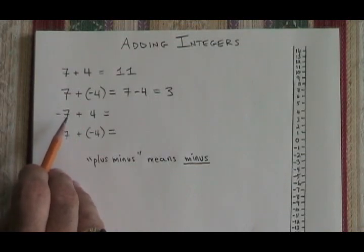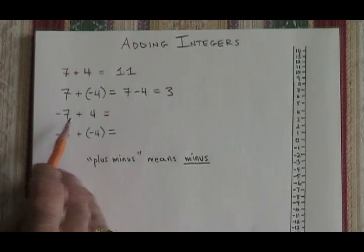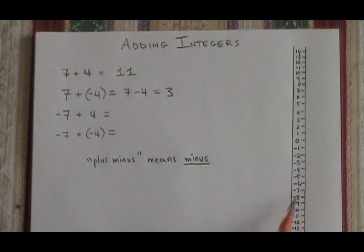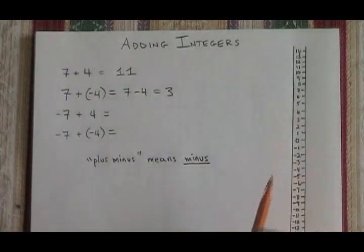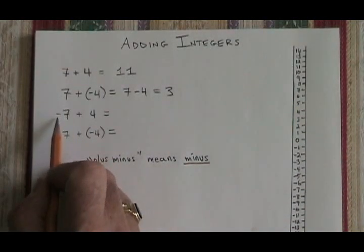At this point, our number line becomes very useful so that we can see what we're doing. I like to turn my number line on its side like this so that I have a thermometer. I find my starting point, which is minus 7.